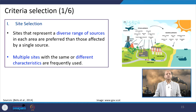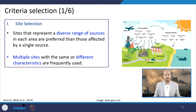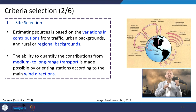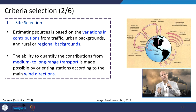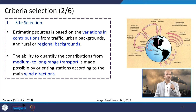For criteria selection, sites representing a diverse range of sources are preferred over those affected by a single source, since diverse sources allow models to work well. Multiple sites with the same or different characteristics are frequently used. When estimating sources, variability in contributions from traffic, urban background, and rural or regional background is considered, and stations oriented to the main wind direction enable quantification of medium- to long-range transport contributions.